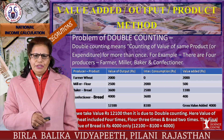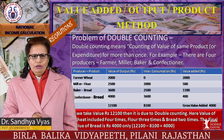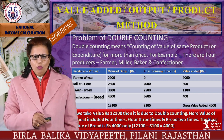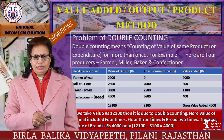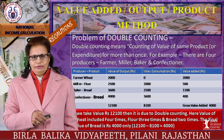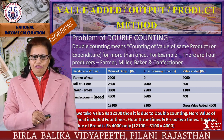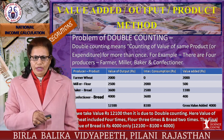The problem of double counting means counting the value of the same product more than once. For example, consider four producers: farmer, miller, baker, and confectioner. The values of output are 2000, 2500, 3600, and 4000 respectively, totalling 12100. If a layman calculates GDP by simply adding these, it is incorrect — 12100 results from double counting. The value of wheat is included four times, flour three times, and bread two times. The final value of the output is 4000 only, i.e., 12100 minus 8100 equals 4000.